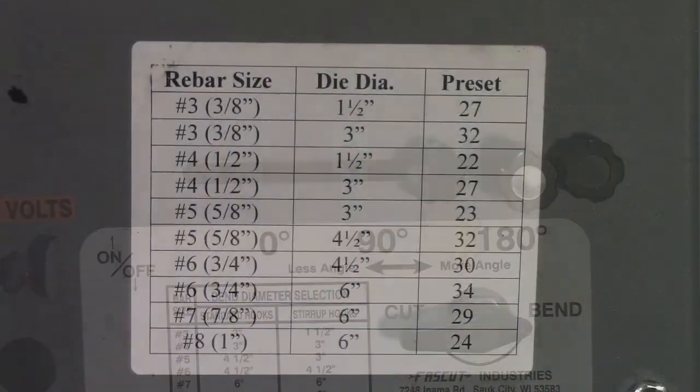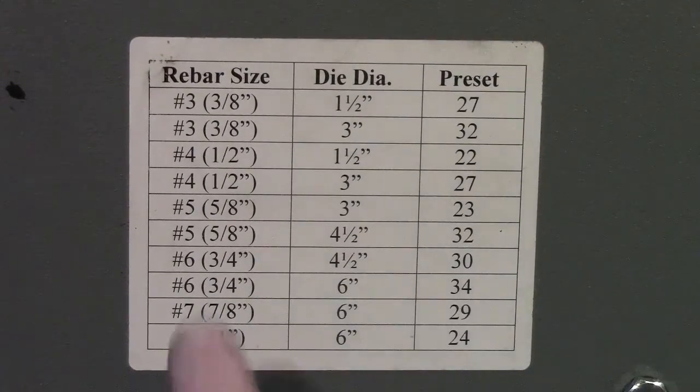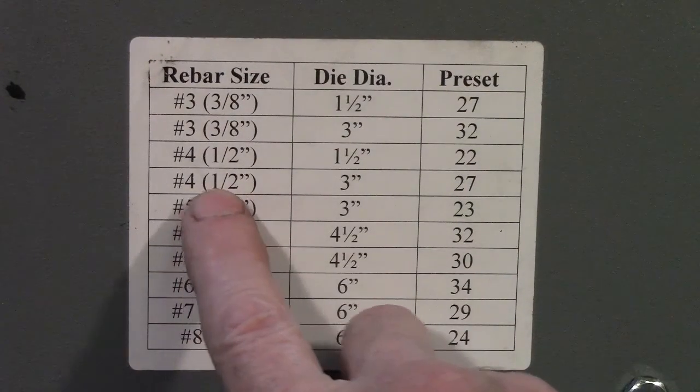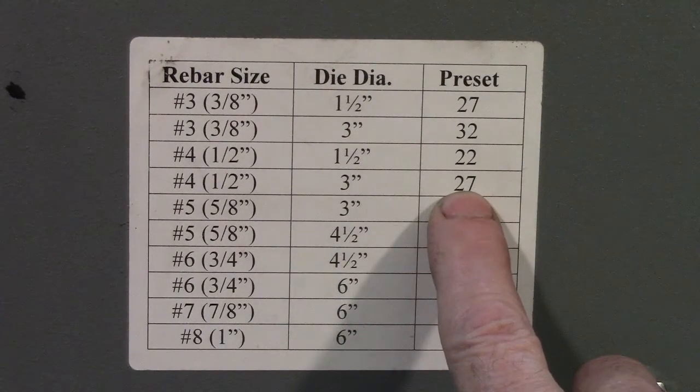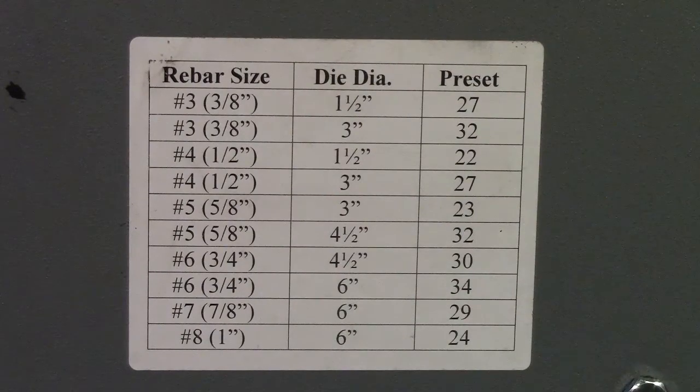To begin, a preset value must be entered to calibrate the controller. The chart on the side of the machine gives you a starting point. For example, if you are bending half-inch diameter bars over a three-inch diameter die, start with a preset value of 27.